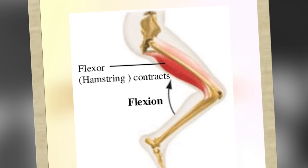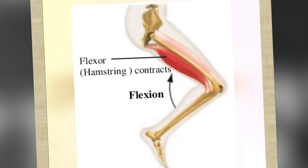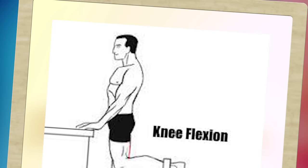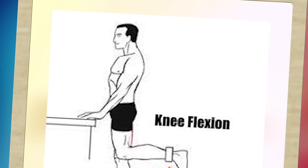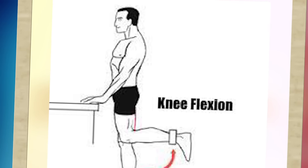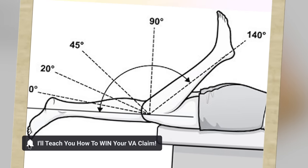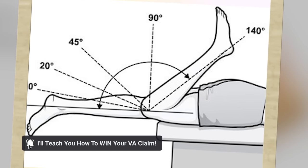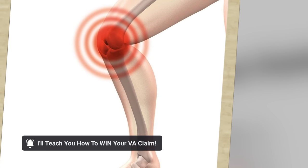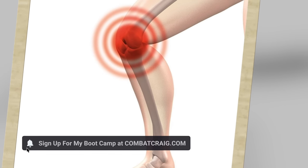Flexion is just the bending of the knee — some limitation in that. The opposite would be extension, so that would be the knee straightening out and having some limitation in that. And then instability is basically when the knee gives out on you.